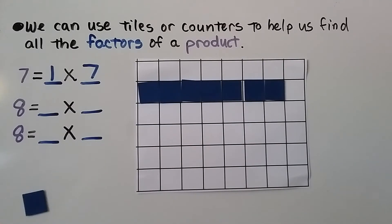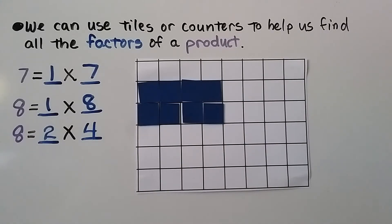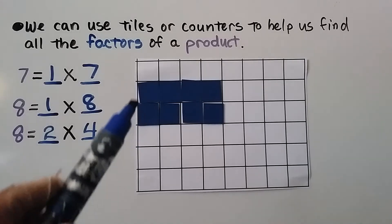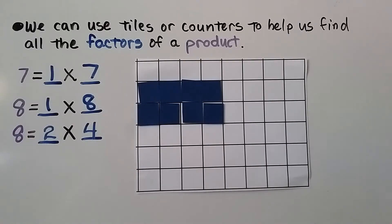That's the only factor pair for 7. What about 8? We can make one row of eight — that's 1 times 8. We can also make two rows of four — that's 2 times 4. Even if we turned these sideways to get four rows of two or eight rows of one, it's still the same factors. So for 8 we have the factor pairs: 1 and 8, and 2 and 4.